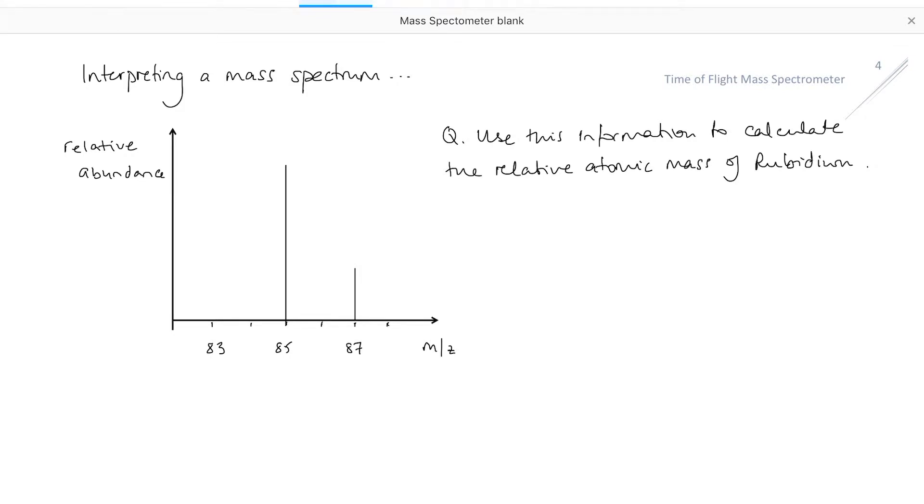If we look at this example for rubidium, we can see that there are two peaks. So that tells me that I have two isotopes of rubidium: rubidium-85 and rubidium-87.